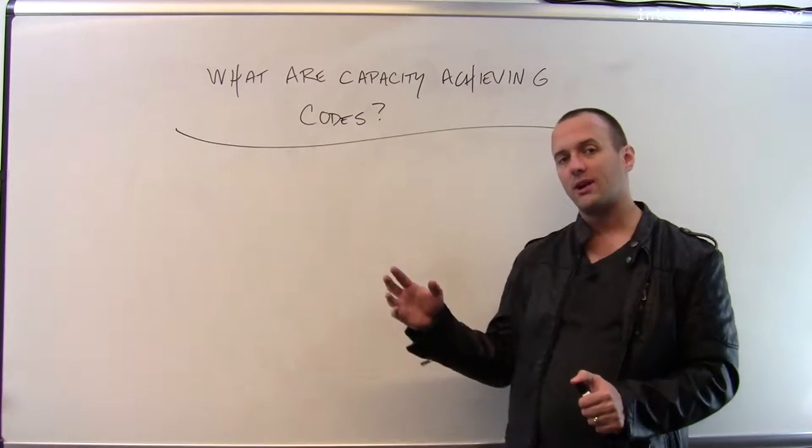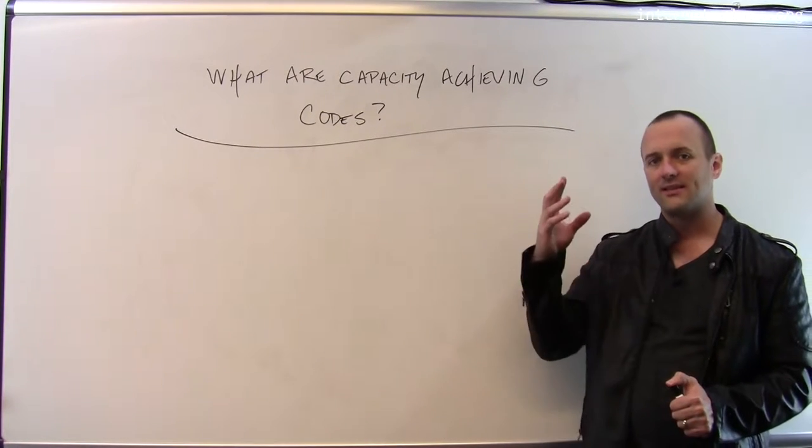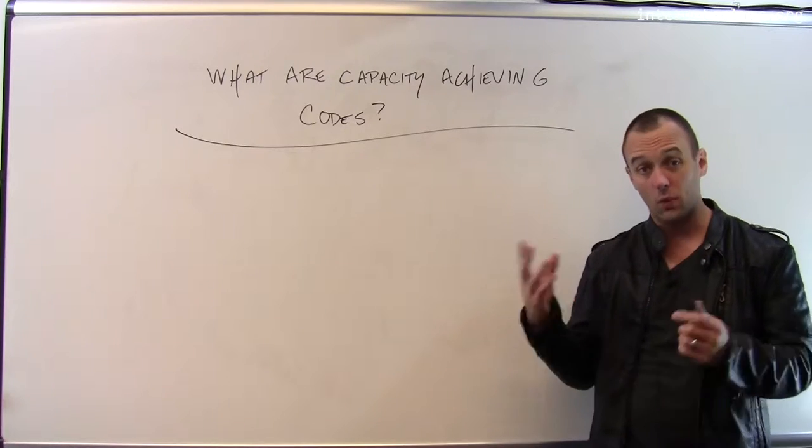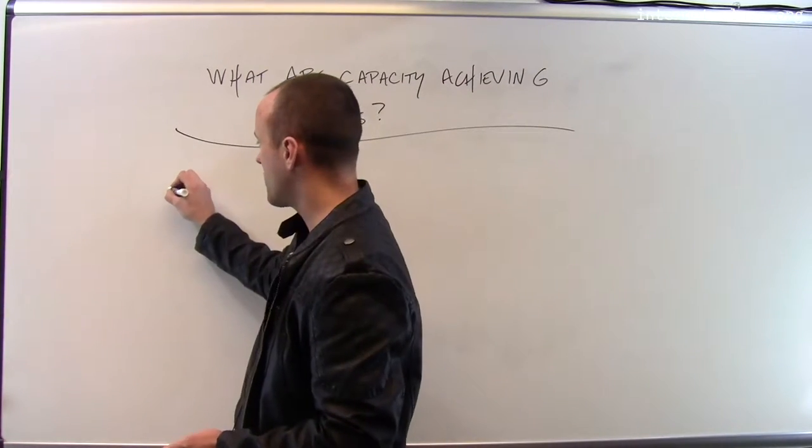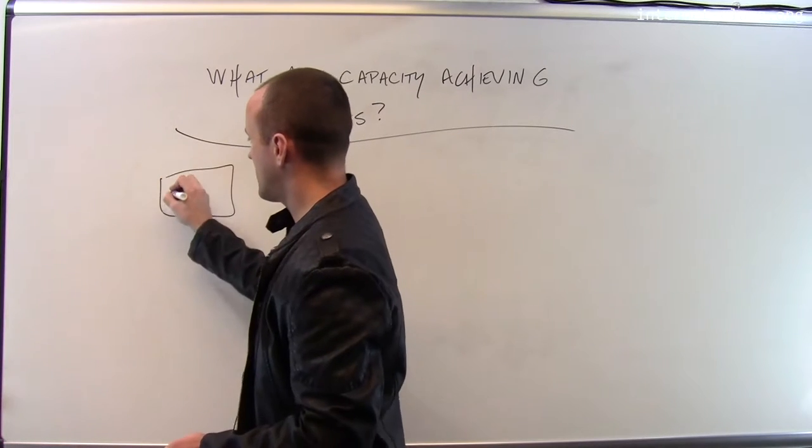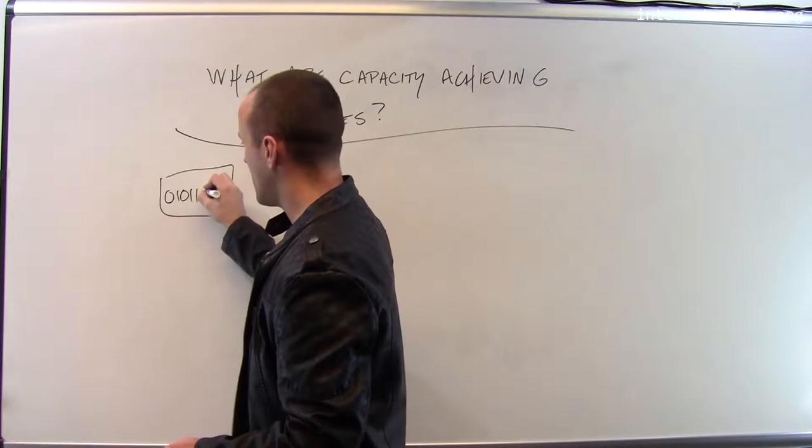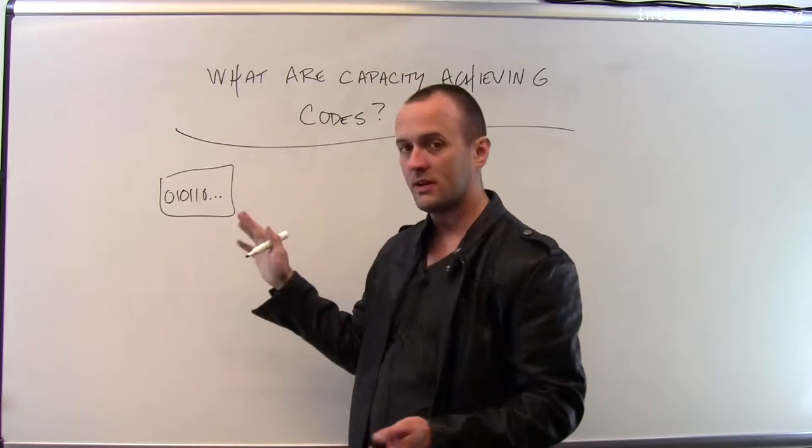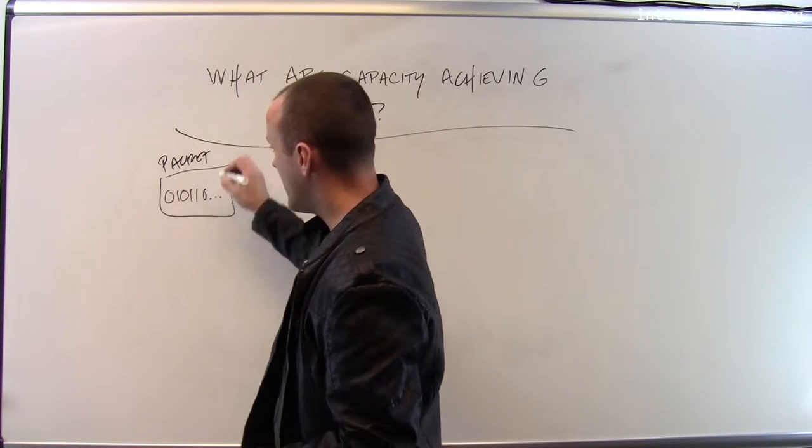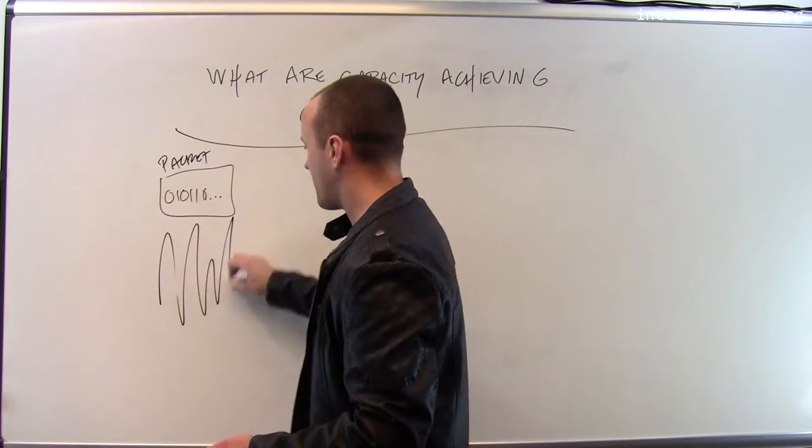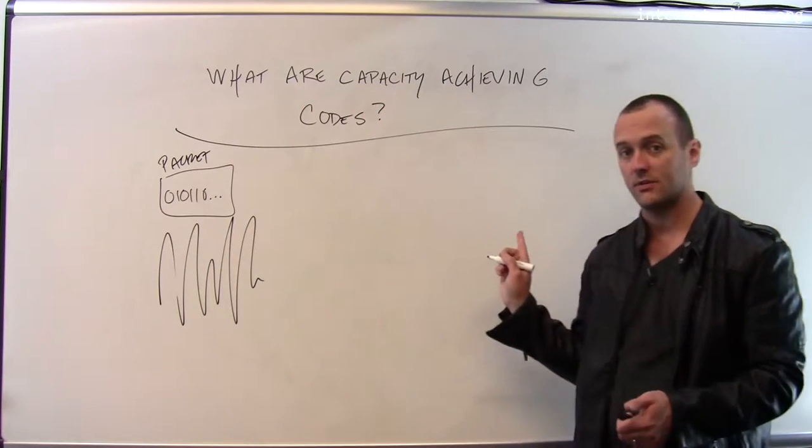Today we actually are at the point where we have something called capacity achieving codes. So what are capacity achieving codes? Well, remember when I'm transmitting wireless data, there is this process of converting whatever the series of zeros and ones in my packet are. I have a packet and I need to convert that somehow to a waveform that's going to encode the data that I'm going to send over the channel.